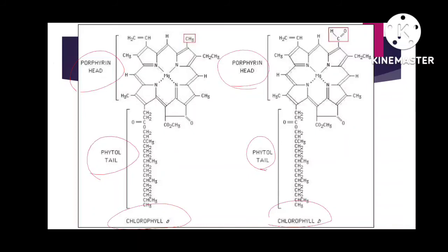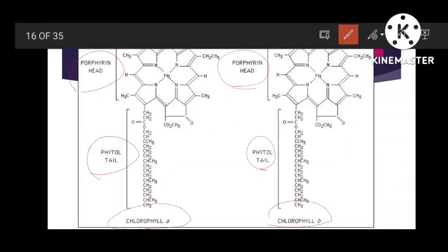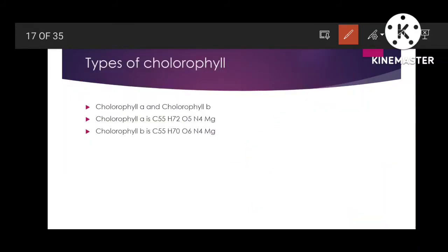You can see the methyl group and the aldehyde group — the aldehyde group is in chlorophyll B, whereas the methyl group is in chlorophyll A. The long hydrocarbon tail contains 20 carbon atoms and is called the phytol tail of the chlorophyll structure. Basically, chlorophyll is an organometallic structure — the organic portion and the metallic magnesium center combined. These are the chemical formulas for chlorophyll A (C₅₅H₇₂O₅N₄Mg) and chlorophyll B (C₅₅H₇₀O₆N₄Mg).